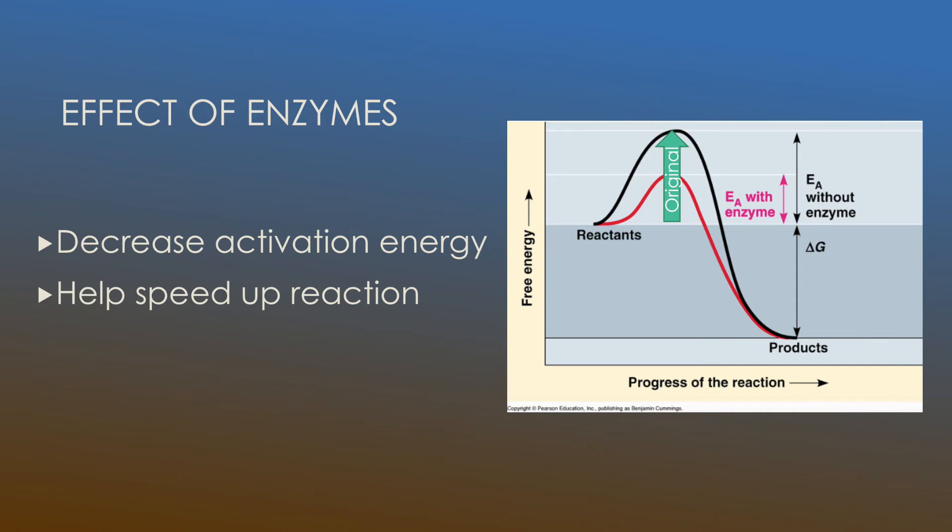That shows us the energy that was initially required for the reaction to be successful without an enzyme. However, if we do end up using an enzyme, that new arrow shows us the activation energy that's required. So as you can see, it's dramatically reduced. And that's the main goal of an enzyme, is to speed up a reaction. And they do this by decreasing the activation energy that's required.